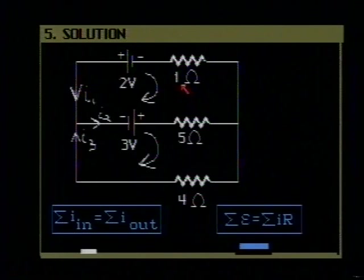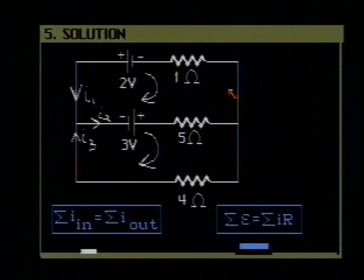And then the next resistor is 5 ohms. I'm also going through it opposite to the direction of the current I2. So I'm going to write that this is minus 5 I2. That's all of the resistors in that loop.